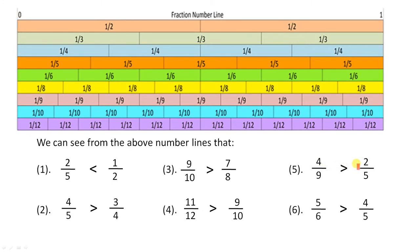Next: 4 ninths is greater than 2 fifths. Let's look at where 4 ninths are — 1, 2, 3, 4 — so there's 4 ninths. Now where's 2 fifths? Here. So 4 ninths is greater than 2 fifths. And finally, 5 sixths are greater than 4 fifths. Let's look at where 5 sixths are — 1, 2, 3, 4, 5 — there's 5 sixths. There's 4 fifths. So 5 sixths are greater than 4 fifths.